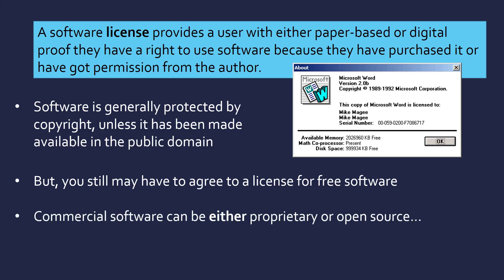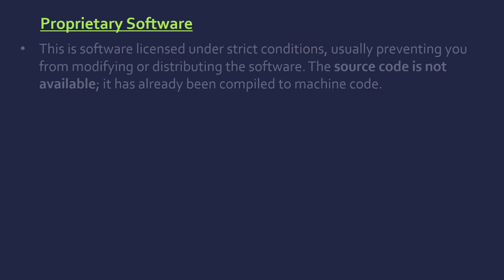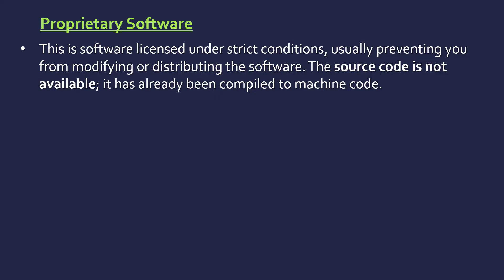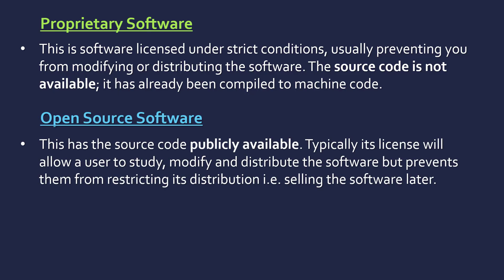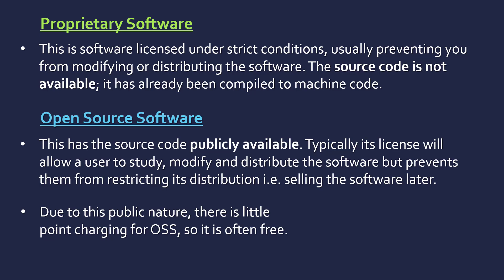Commercial software can either be proprietary or open source. Proprietary software is licensed under strict conditions, usually preventing you from modifying or distributing it yourself. Crucially, the source code is not available to you — it's already been compiled to machine code, so with proprietary software you've paid for it and can only use it. Open source software is where the source code is publicly available and comes with the program. The license usually allows users to modify it, look at the source code, and distribute it, but you can't restrict the distribution. Due to this public nature, there's not much point in charging for it, so it's often free. Good examples are Linux and Android.